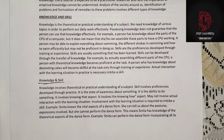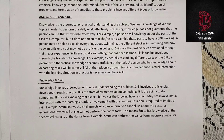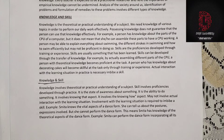Skills can be developed through the transfer of knowledge. By actually assembling different parts of a CPU, a person with theoretical knowledge becomes proficient at the task. A person who has knowledge about decorating cakes will become skillful only through training or experience. Actual interaction with the learning situation in practice is necessary to imbibe a skill. In summary: knowledge involves theoretical or practical understanding of a subject, while skill involves proficiencies developed through practice. Knowledge is the state of awareness about something; skill is the ability to do something. Knowledge involves 'knowing that,' while skill involves 'knowing how.' For example, Smita knows the vital aspects of a dance form — the postures and expressions — but she cannot perform the dance. This means Smita has knowledge of the theoretical aspect but not the skill.